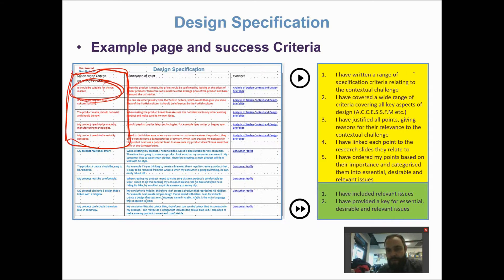With your design specification, it's useful to write a range of different criteria, but it's very important to make sure those criteria are comprehensive and meaningful — not just written for the sake of it. It's also important not to neglect key aspects of the project, and that's where structures like ACCESS FM can come in useful.